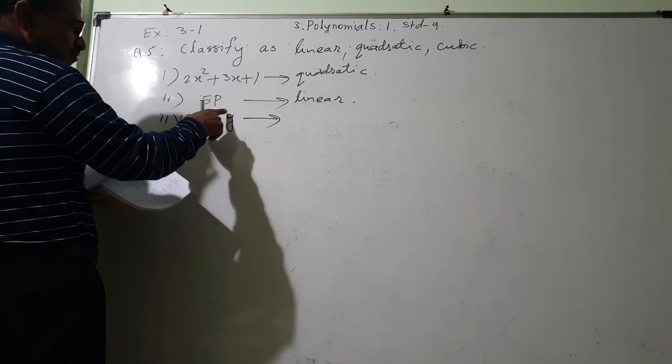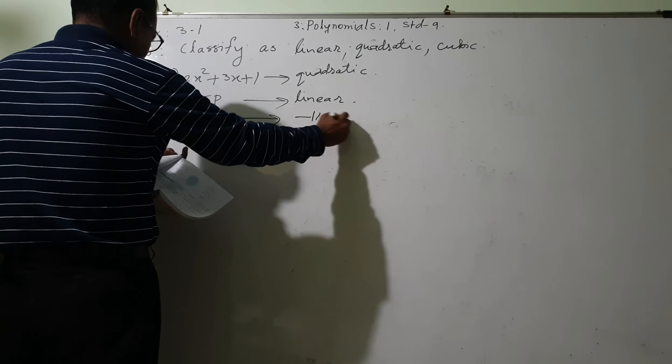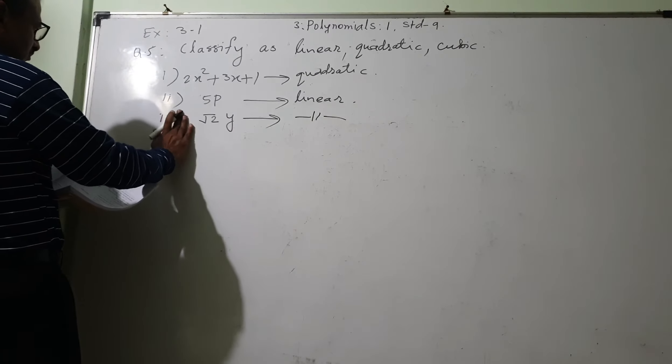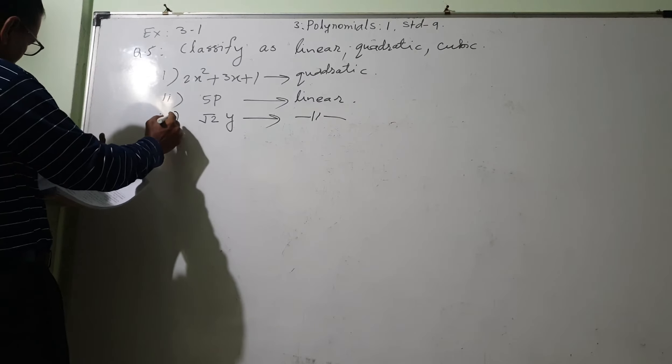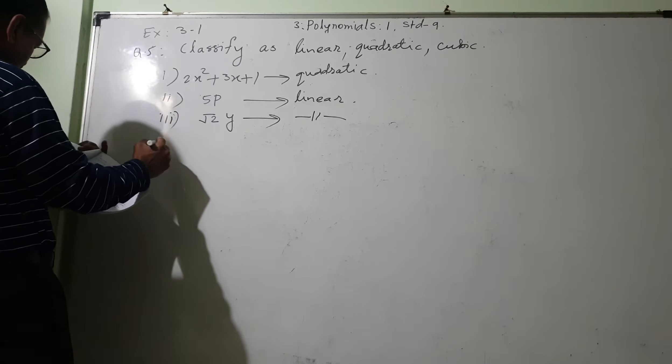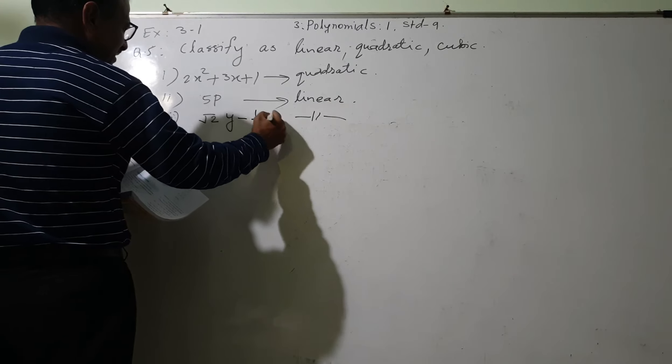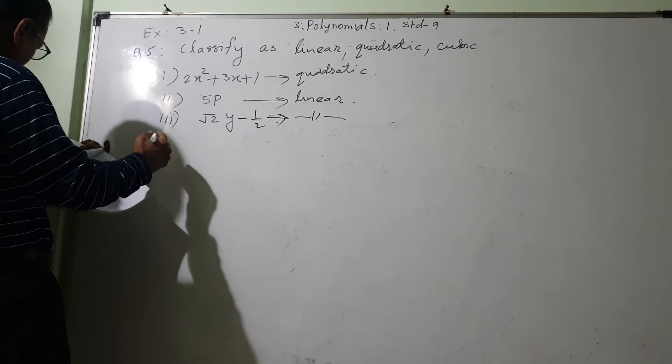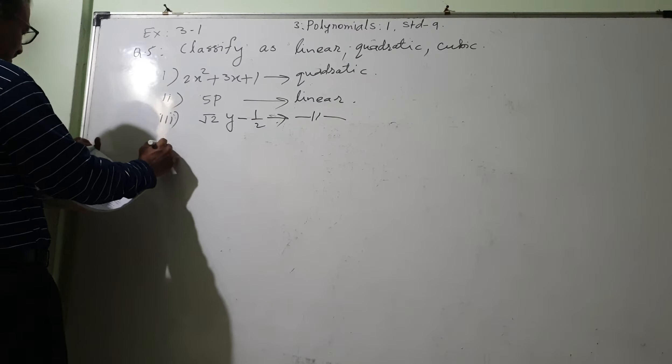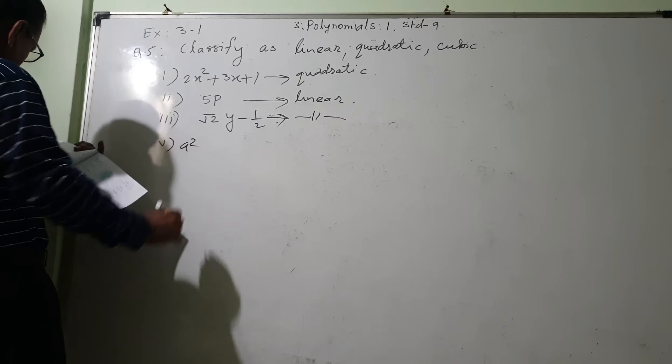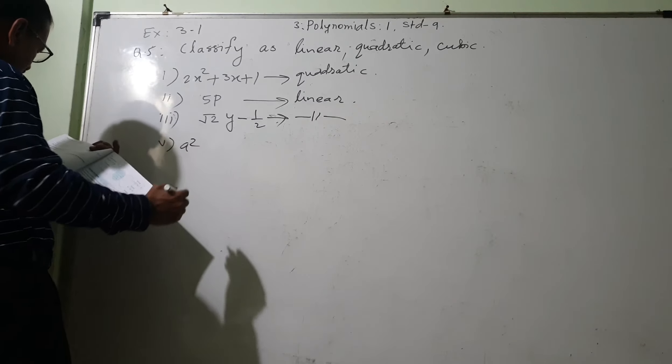Degree is 1, so this is also linear. This was the third one. Root 2 minus half, etc. That is not mattering a lot. Fifth is square, it is quadratic.